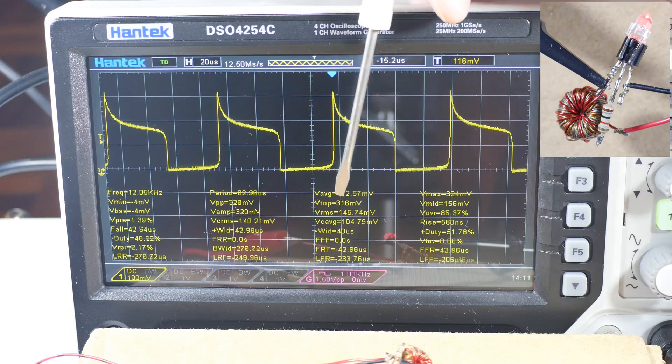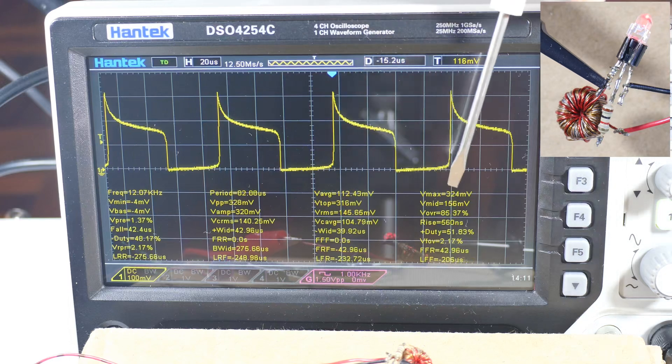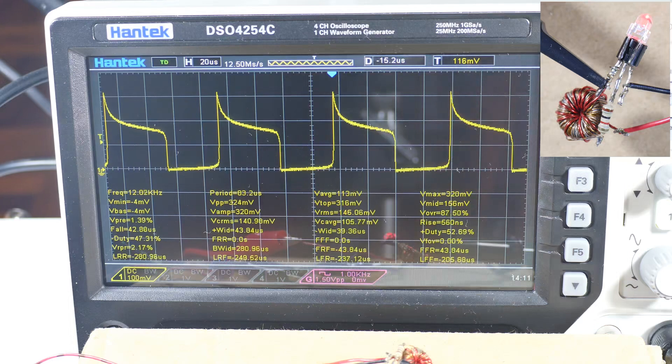Let's see peak to peak 320. So a little different. V max 324. Okay. So let's vary the voltage and see what happens.